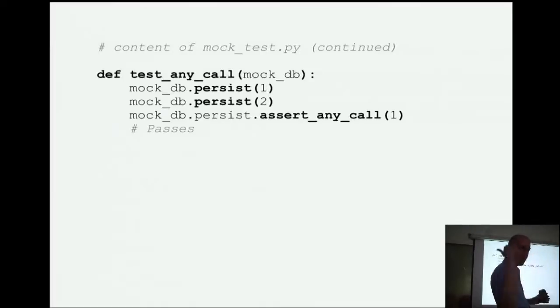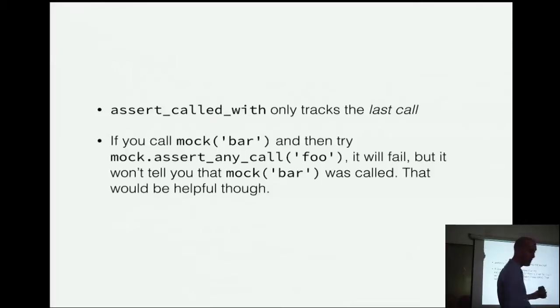But, what if we have multiple calls? So, we'll say persist one. And we'll say persist two. And then we'll say assert any call one. So, that hopefully makes sense as an assertion. I'm saying, I don't care what order it happened. And just tell me, were you ever called with one? And that will pass. The gotcha is, and this is why I wanted to show you assert any call. So, by default, assert_called_with, not by default. It's the way it works. It only tracks the last call. I feel like this is sort of misnamed. Because to me, if you're like, hey, Mark, were you called with foo? To me, in plain English, that means, yeah, I was called with foo. I was also called with bar. We had different calls. But that's what assert any call is for. So, assert_called_with only tracks the last call. I wish it was called assert last called with. Because then there'd be no confusion.